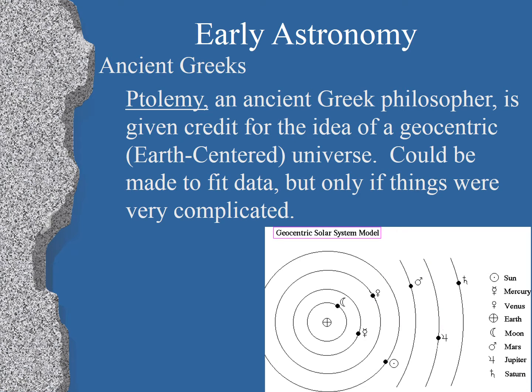The history of astronomy started with the ancient Greeks. A philosopher by the name of Ptolemy is given credit for the idea of a geocentric universe, which means Earth is at the center and everything revolves around the Earth.